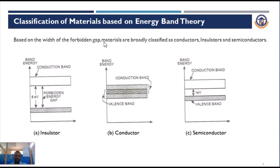For insulators, the forbidden gap between the valence band and the conduction band is very wide — approximately 8 electron volts. For conductors, the valence band and the conduction band overlap, meaning there is no forbidden gap. For semiconductors, the valence band and the conduction band are separated by a certain distance, approximately 1 electron volt.